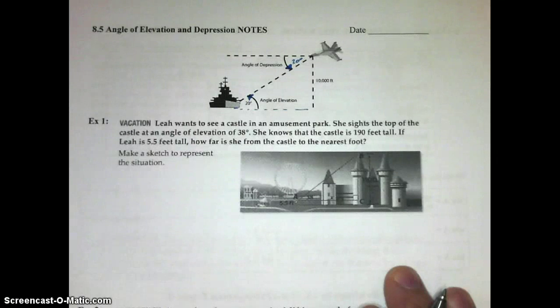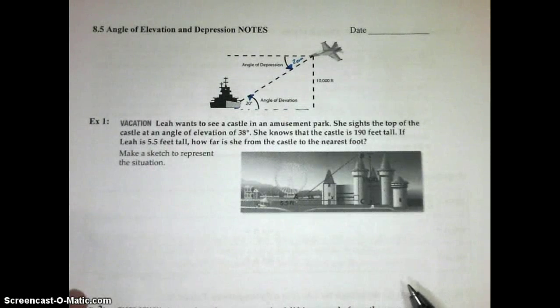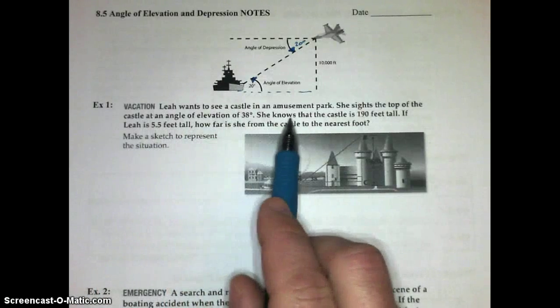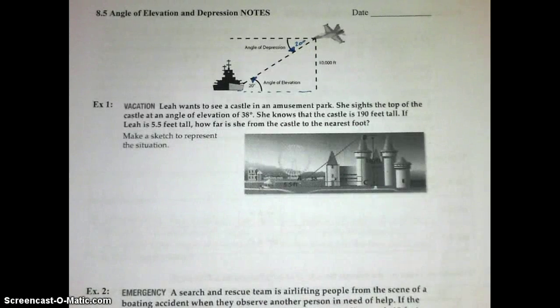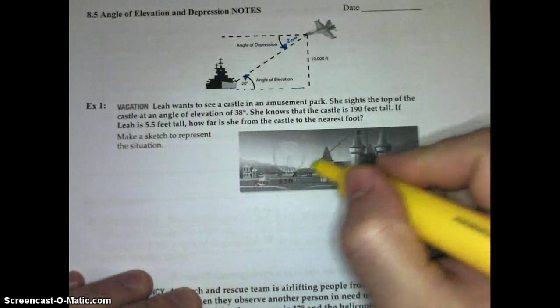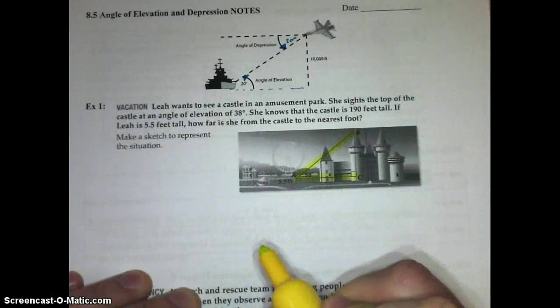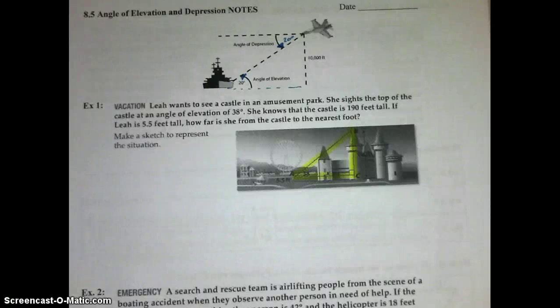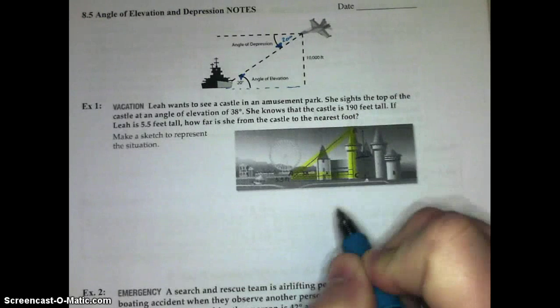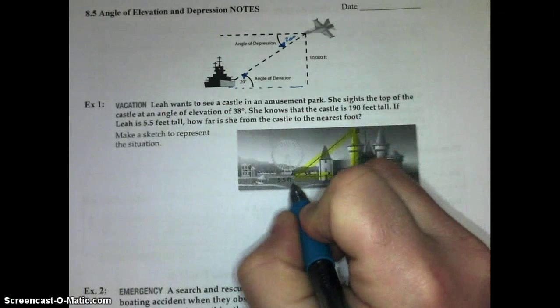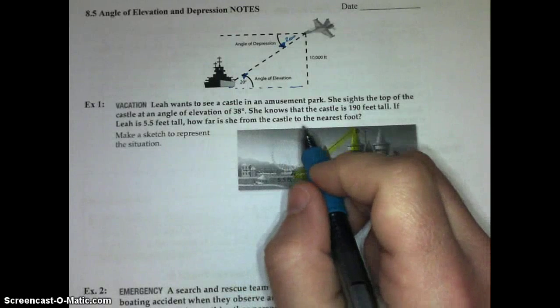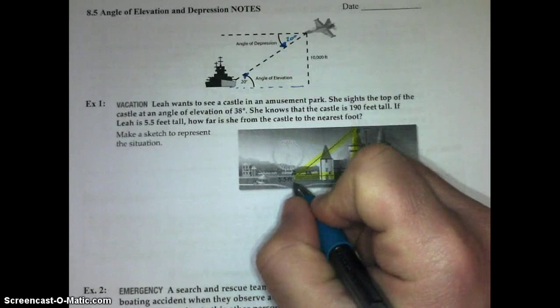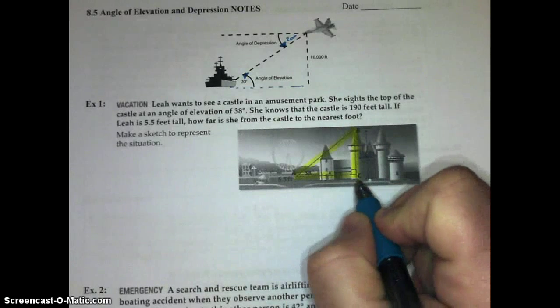Anytime you have to look up, you're forming an angle of elevation. Remember, all horizontal lines are parallel. So this 20 degree angle of elevation is congruent to this 20 degree angle of depression. We can use things like this to form right triangles. Since we know those angles, we know our trigonometry rules, we can find measurements and do a lot of calculations just with that very little bit of information. Here's our first example. Leah wants to see a castle in an amusement park. She sights the top of the castle at an angle of elevation of 38 degrees.